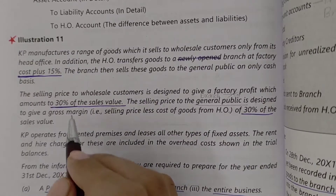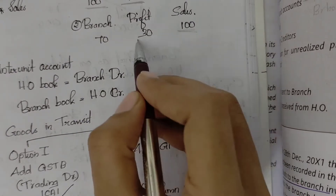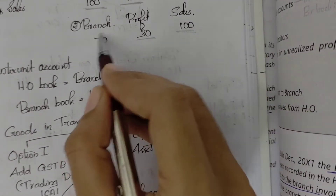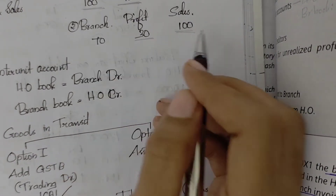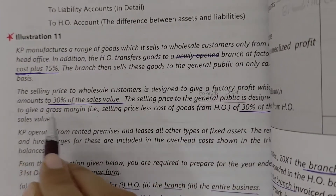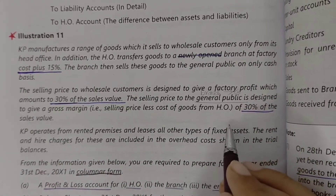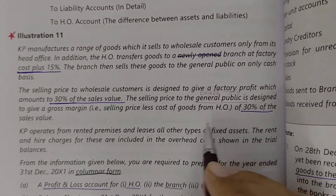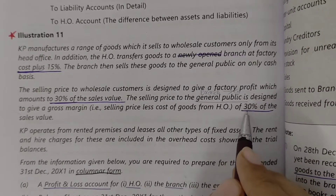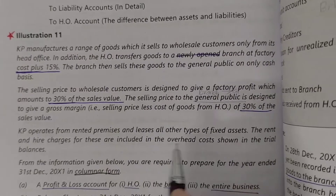So the selling price gives 30% of sales value — meaning sales 100 gives 30% profit, so cost is 70 and sales value is 100. The selling price to the general public is also designed to give a gross margin of 30% of sales value, so the branch also earns 30% profit on its sales.